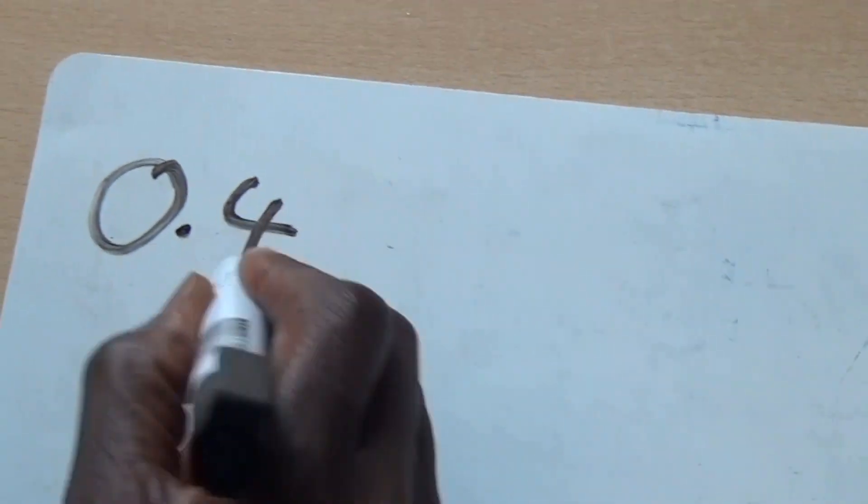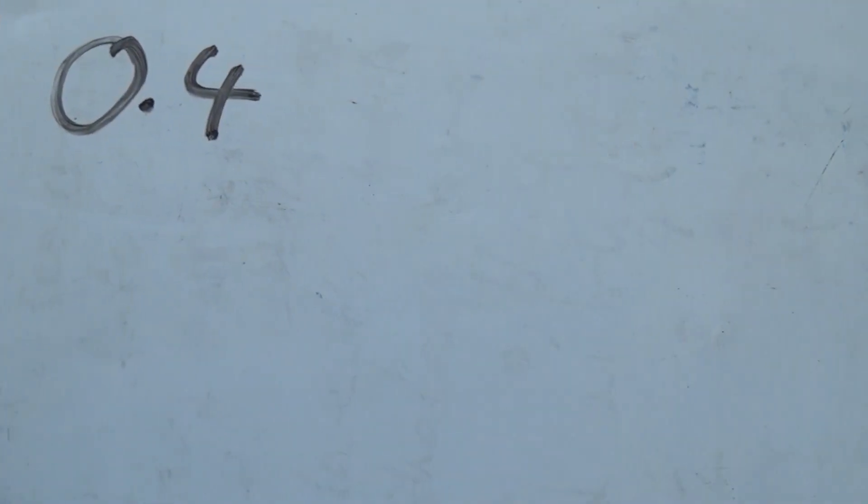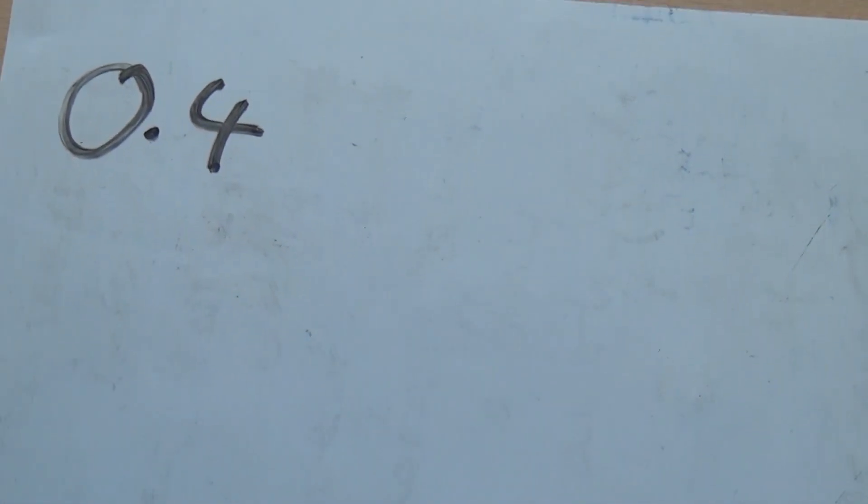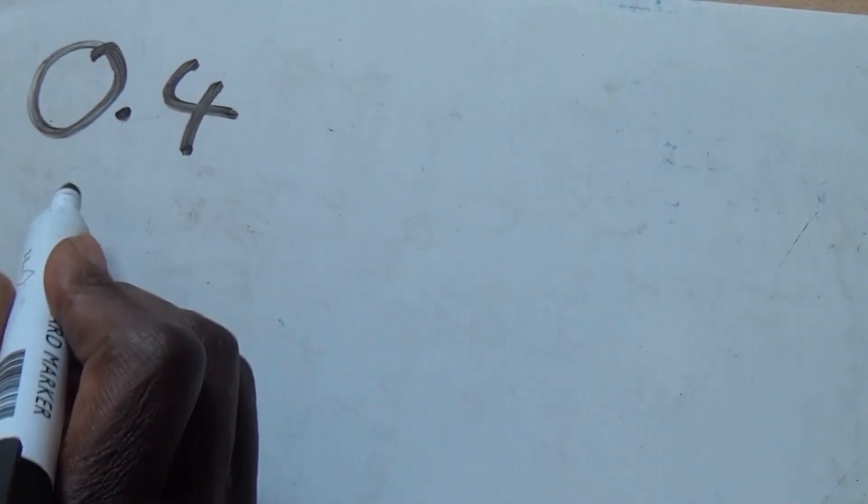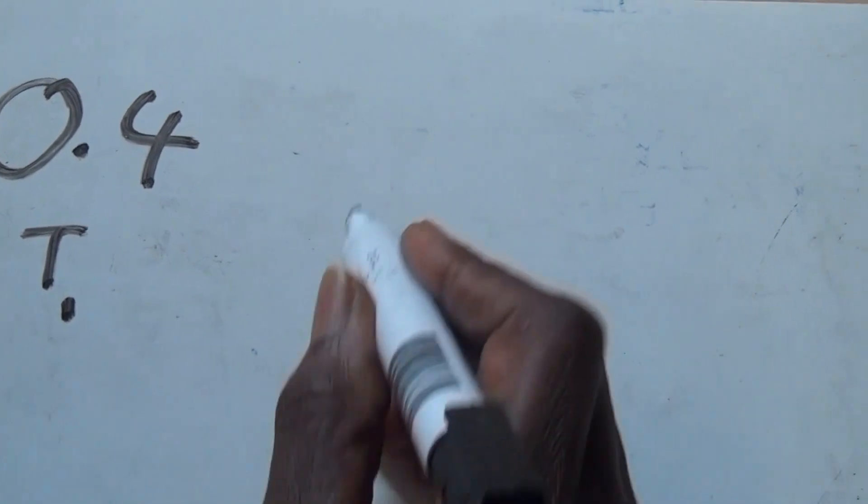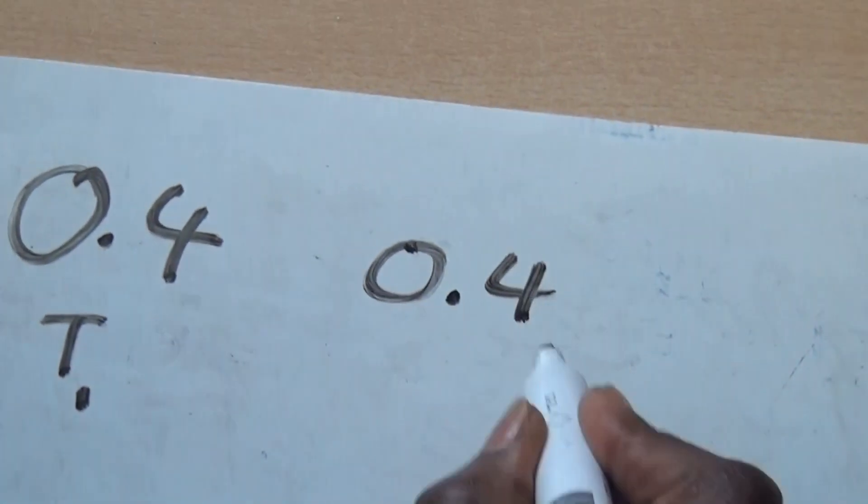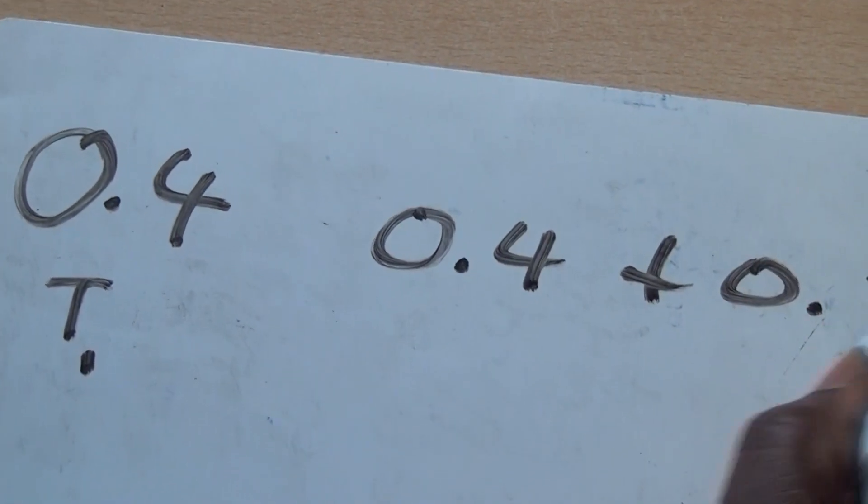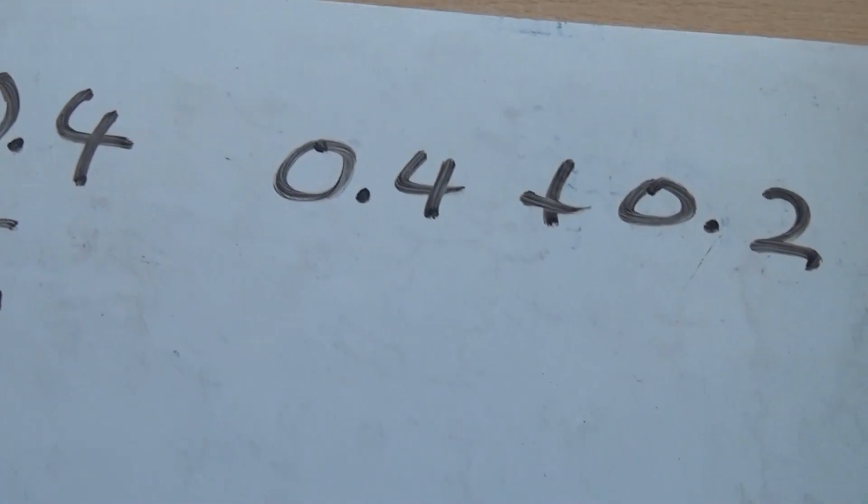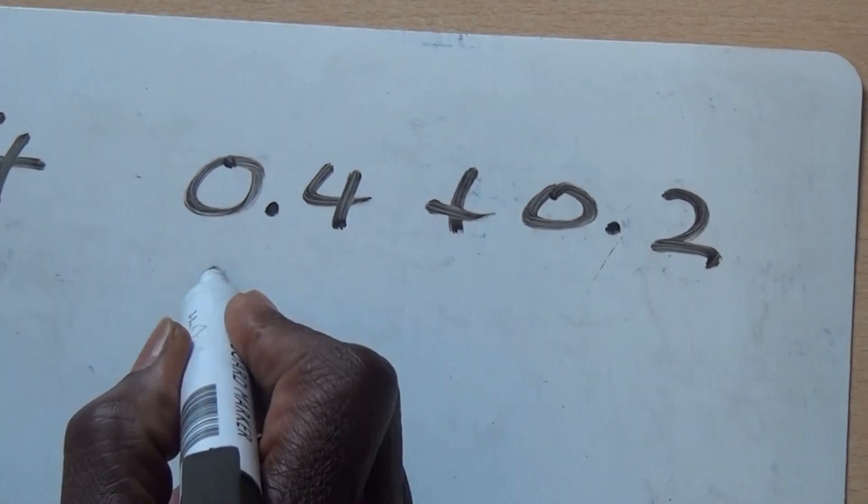The task is to create a sequence. The sequence starts with the term 0.4. Thereafter, it is supposed to increase by 0.2 every time. This is called the first term, we can call it T1. The next one should be 0.4 plus 0.2, which gives us 0.6.